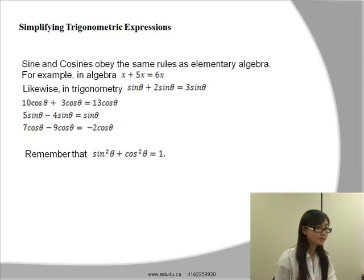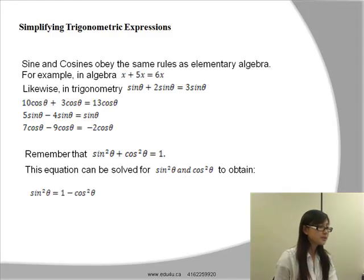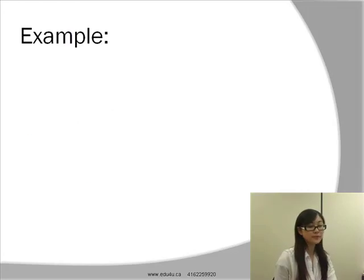Recall that sine squared plus cosine squared equals 1. So we can rearrange this so that sine squared will be equal to 1 minus cosine squared, and cosine squared will be equal to 1 minus sine squared.